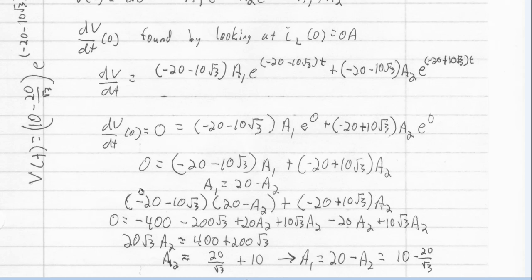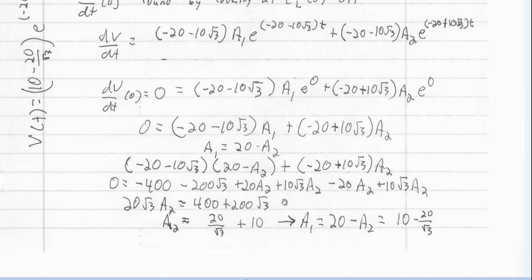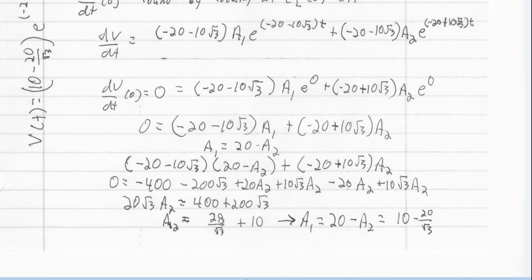This should be zero equals. And so zero is equal to, if I multiply all this out, solve ultimately for A2. I get that A2 equals 20 over square root of 3 plus 10. And therefore, since A1 is equal to 20 minus A2, that means that A1 is equal to 10 minus 20 over square root of 3. So now I've got my A1, I've got my A2. And so I didn't even have to use MATLAB, didn't have to use matrices at all on this.